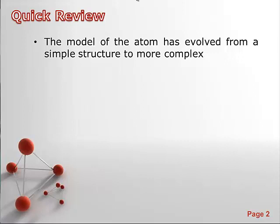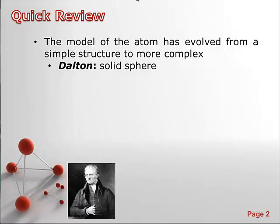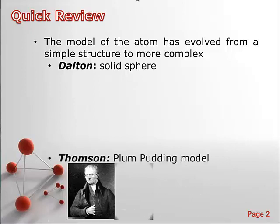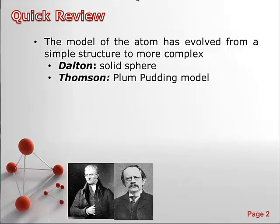We know that the model of the atom has evolved from a very simple structure to something more complex, starting off with the Dalton model, which was a solid sphere with a predictable mass. And we know that when those atoms combine in compounds, they combine in whole number ratios. Moving on to the Thomson model, otherwise known as the plum pudding model, we called it the blueberry muffin model, and this was the first evidence that we have particles that are smaller than that of atoms, and these were negatively charged blueberries or negatively charged particles that were inter-dispersed throughout the atom.